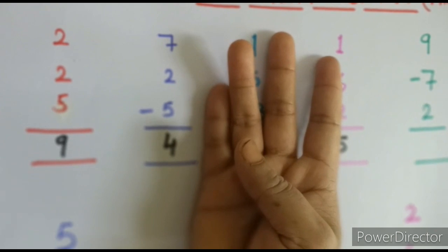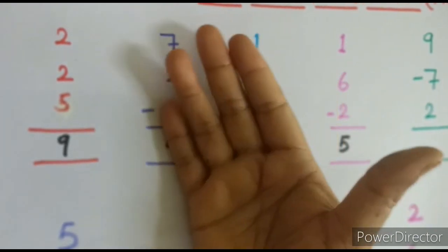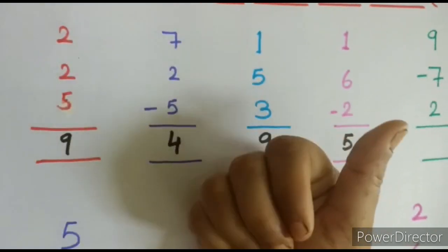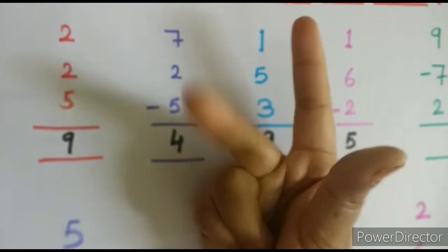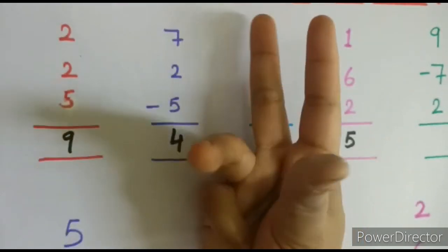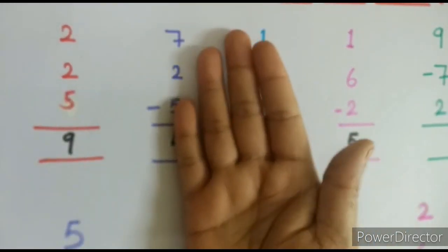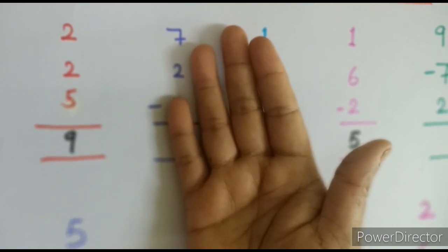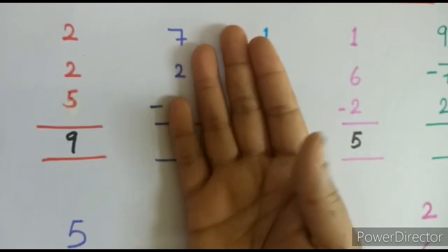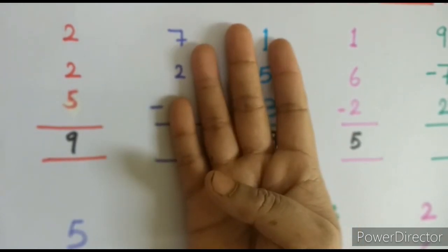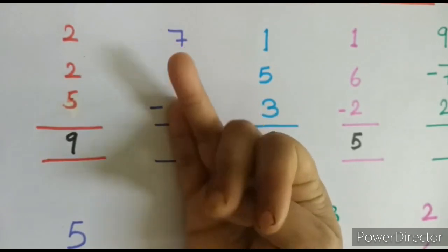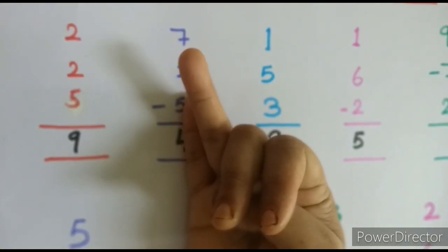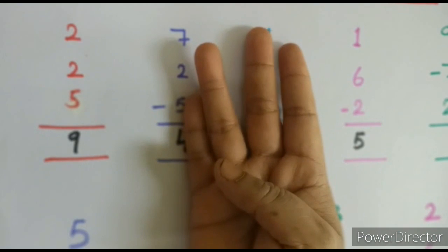To summarize: first open the thumb finger which represents 5, then 6, 7, 8, 9 — the whole hand represents 9. Then for subtraction minus 7, we close the thumb which represents 5, then 6, 7. For plus 2, open 2 fingers again. The answer is 4.